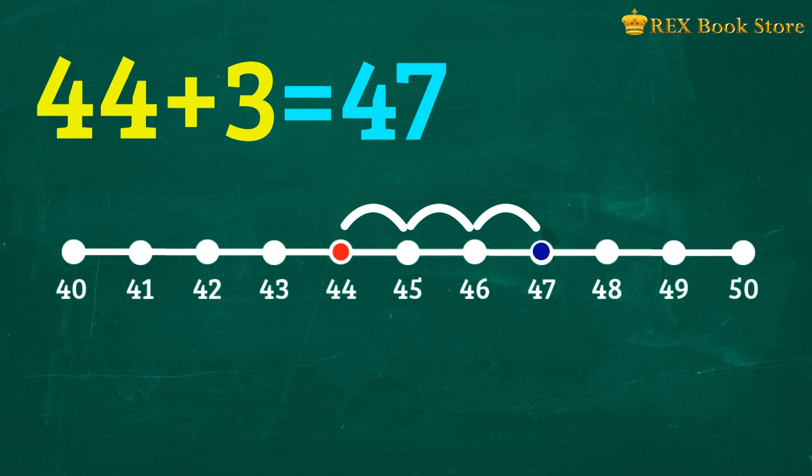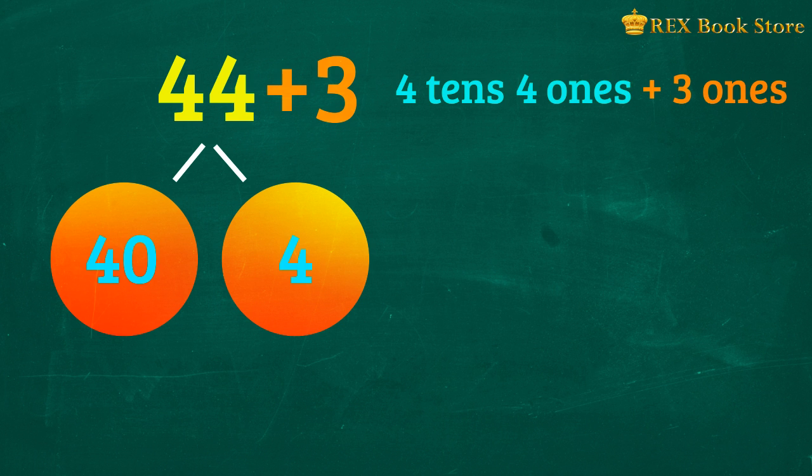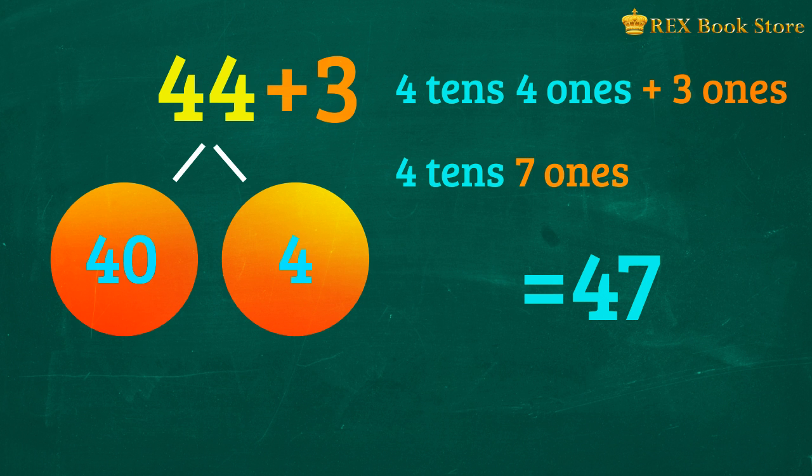We can also add these numbers by using number bonds. Remember what number bonds are? It shows the relationship between a whole number and its parts. We can write 44 as 40 and 4 for easier adding. At the same time, we will write the equation in tens and ones. So 44 plus 3 is 4 tens, 4 ones plus 3 ones. Then we add them together to come up with 4 tens, 7 ones, or 47. So 44 plus 3 is equal to 47.